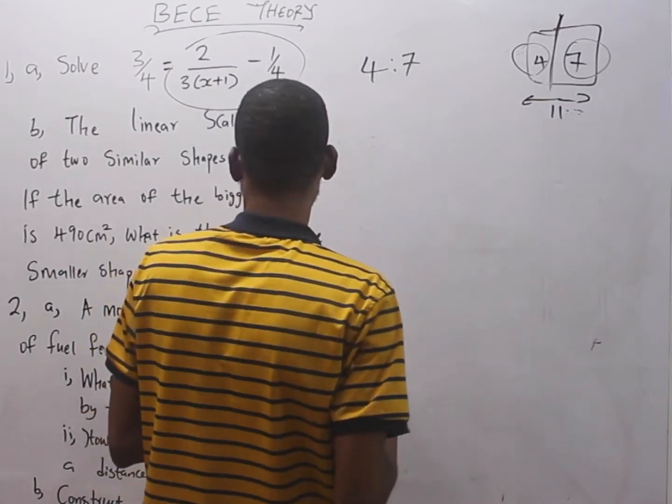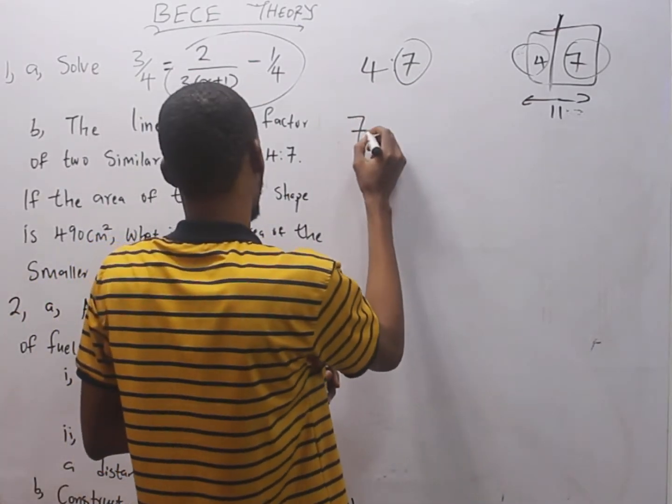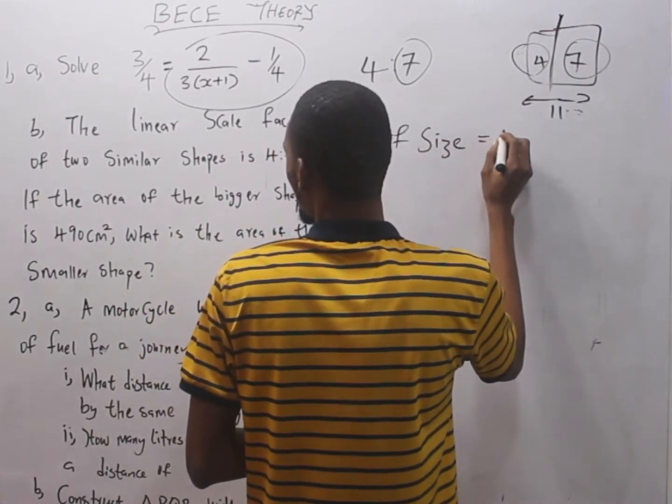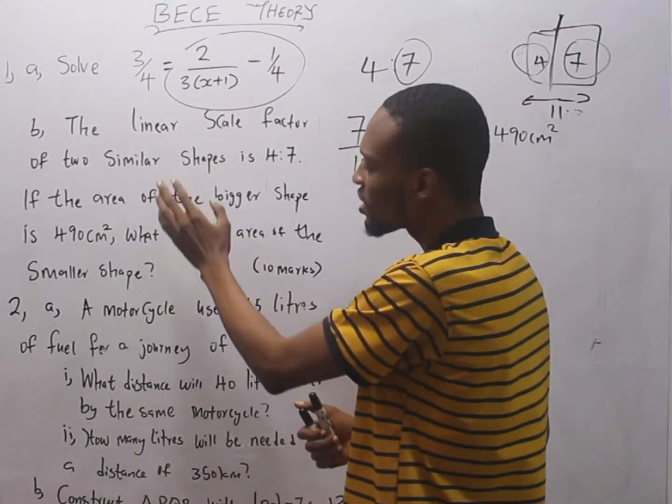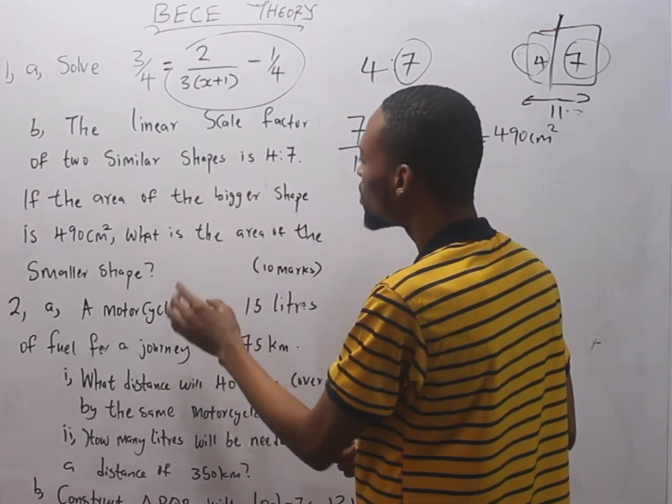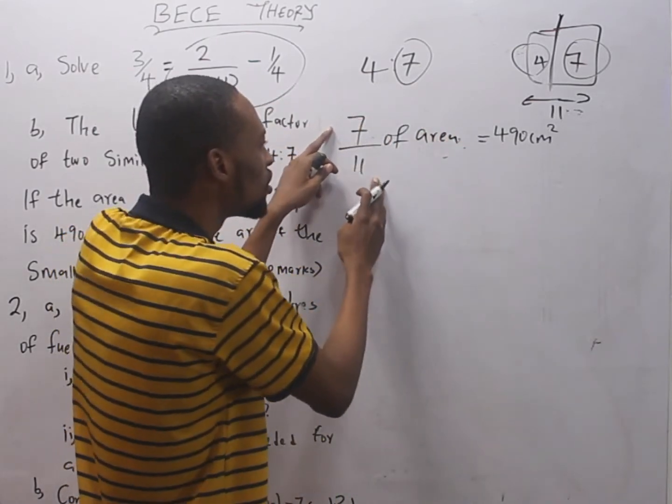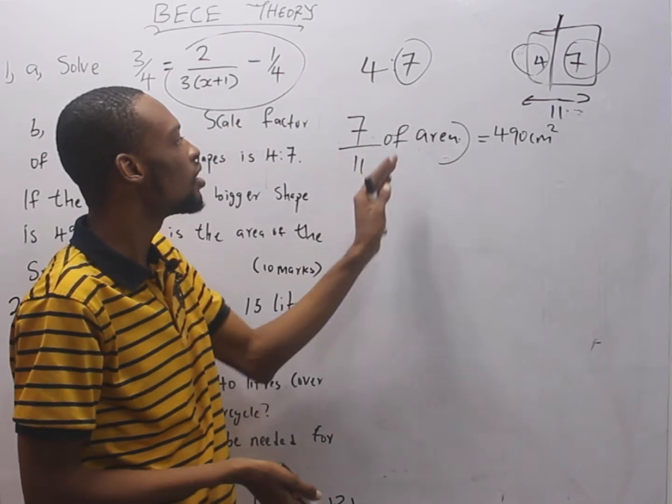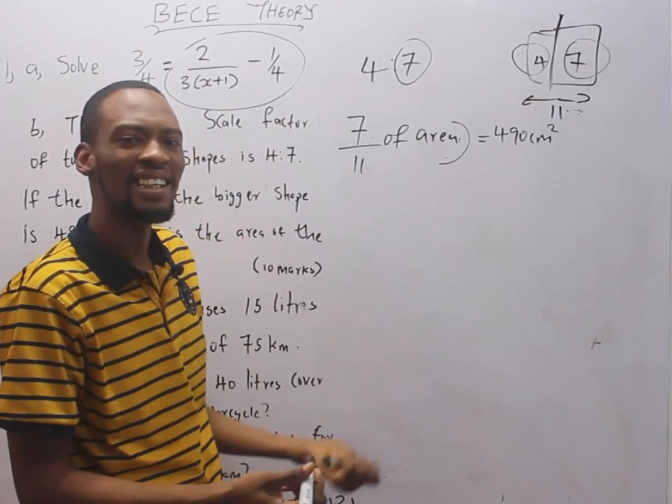They said if the area of the bigger shape is 490 cm2, what is the smaller shape? The bigger shape will simply be the one with the ratio of 7. This means 7 over the total ratio 11 of the area equals 490 cm2.